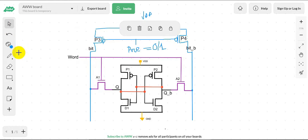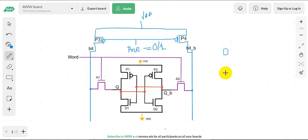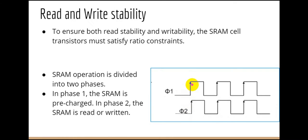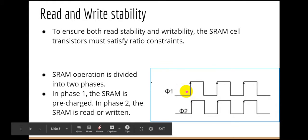Before the read and write operation, we have to keep the precharge signal at zero. At the beginning of phase one, during this duration, the bit and bit-bar lines will be precharged. During the rising edge of phi-2, when the read or write operation begins, the precharge circuit will be turned off and the data will be stable at the bit and bit-bar lines.